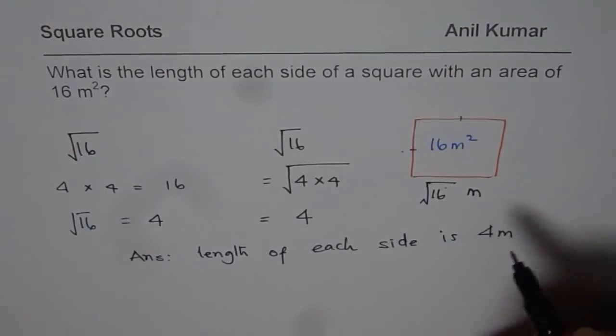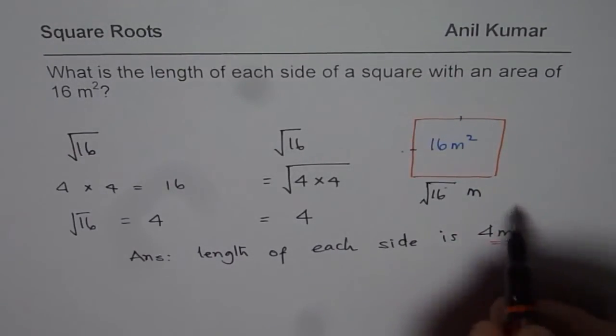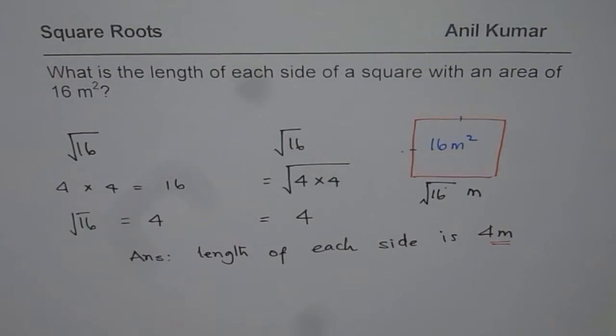It is very important to write down the units. Meters. Since the area is given to us in meter square, length and width for this square is going to be 4 meters each. I hope that helps. Thank you and all the best.